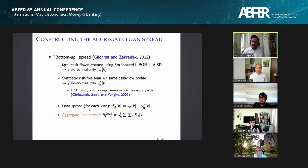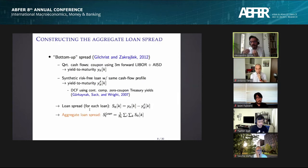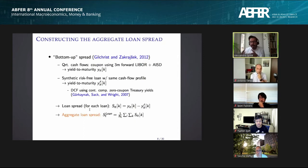We use the same bottom-up spread approach as Gilchrist and Zakrasek. For each loan each day, we construct the sequence of future cash flows using the LIBOR forward curve. With the LSTA price and the cash flow sequence, we back out the implied yield to maturity for the risky loan. We then construct a synthetic risk-free loan with the same cash flow profile discounted at the risk-free rate. The loan spread is the yield to maturity on the risky loan minus that of the synthetic duration-matched risk-free loan, and the aggregate spread is the monthly average.